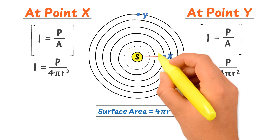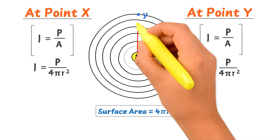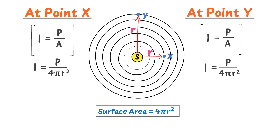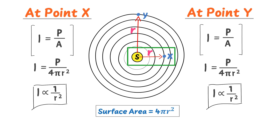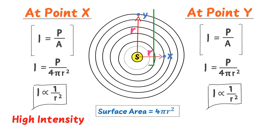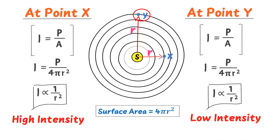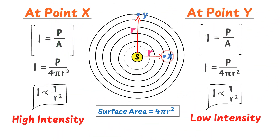The distance of point X from the source is R. According to this equation, intensity is inversely proportional to the square of the radius. The distance or radius R of point X from the source is small, so the sound intensity will be high at point X. While the distance or radius of point Y is large, so the sound intensity will be low at point Y. Thus, moving away from the source means larger radius, larger radius means less intensity, and vice versa. Sound intensity at point X is high and sound intensity at point Y is low.